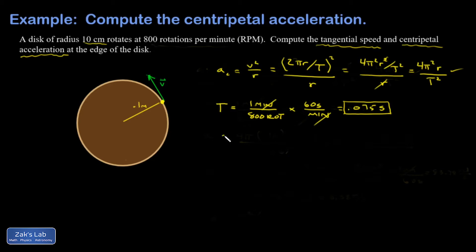Plugging into our new centripetal acceleration formula, I get 4 pi squared times 0.1 meters all divided by 0.075 seconds all squared. And you can see there that the units are meters per second squared, as they should be. And I end up with about 702 meters per second squared.